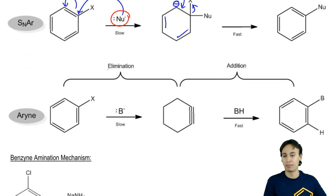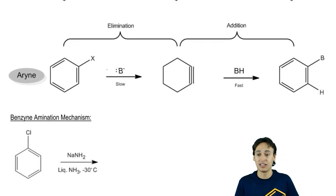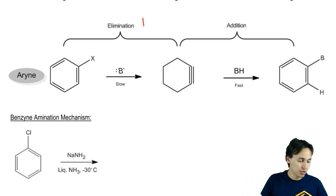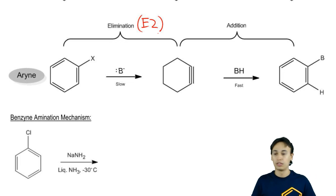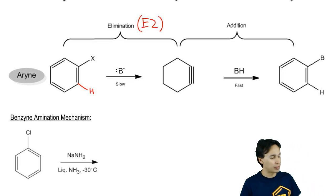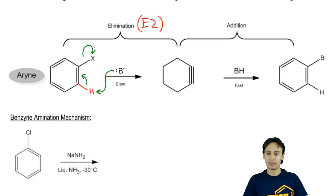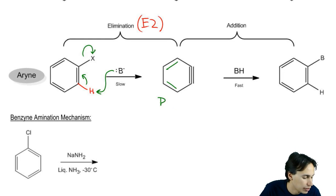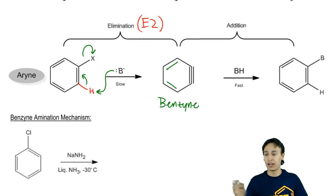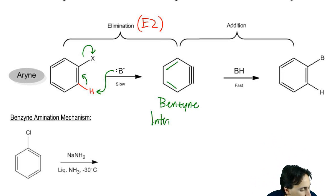The aryne pathway is much, much different because we have to actually eliminate first. How do you eliminate from a benzene? You literally have to do an E2 — a beta elimination on the benzene. You use a strong base to grab one of the H's, do the three arrows for an E2 attack: grab the H, make a triple bond, and kick out the X. This makes a very unstable benzyne intermediate, which is an aryne — a benzene ring with a triple bond, so extremely unstable.